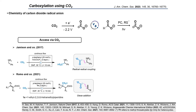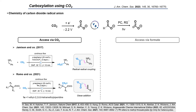Jamison managed in his reaction to perform a radical-radical coupling, paving the way to the formation of specific amino acids, while Romo published the use of this radical anion in the carboxylation of activated alkynes.